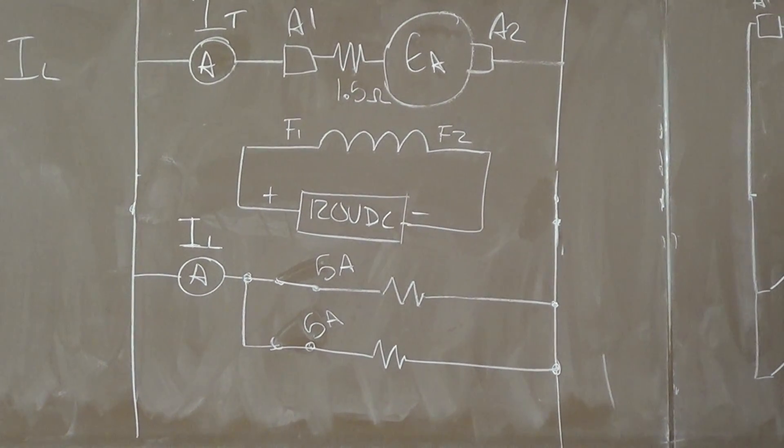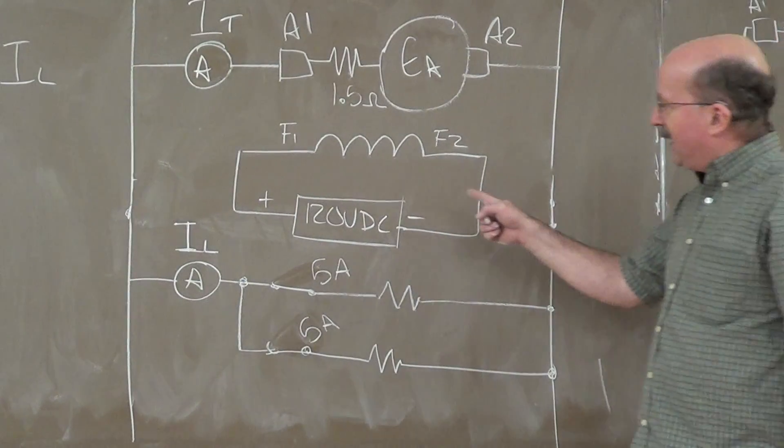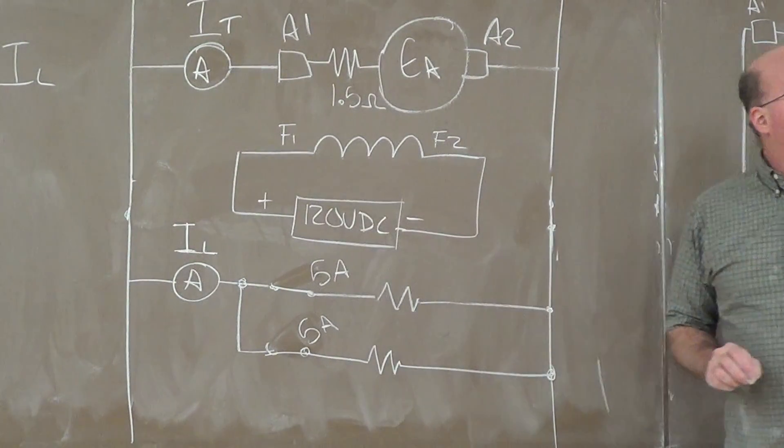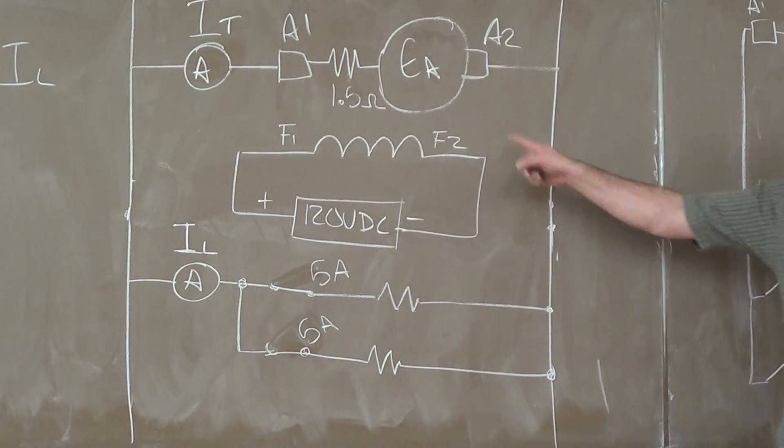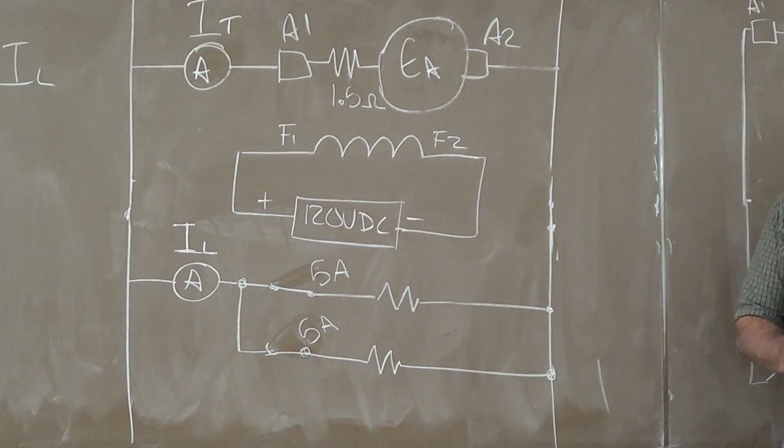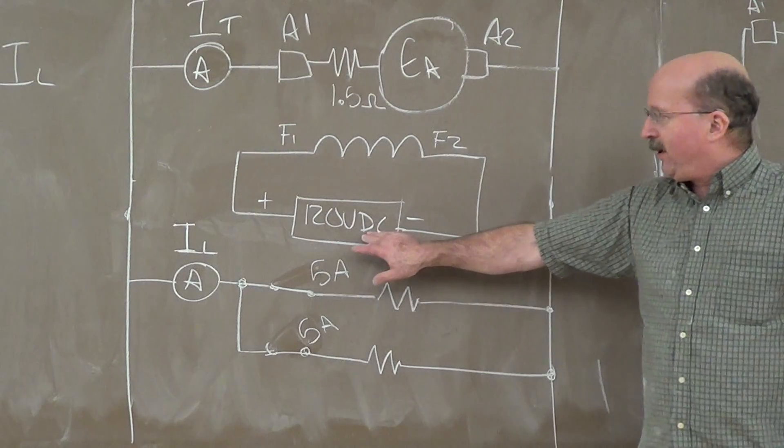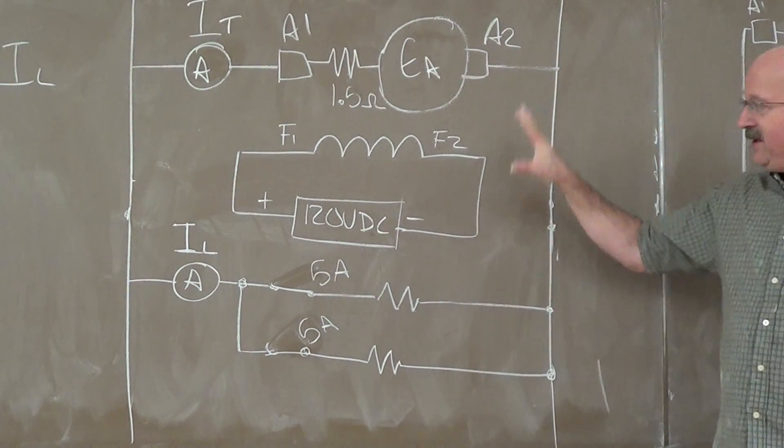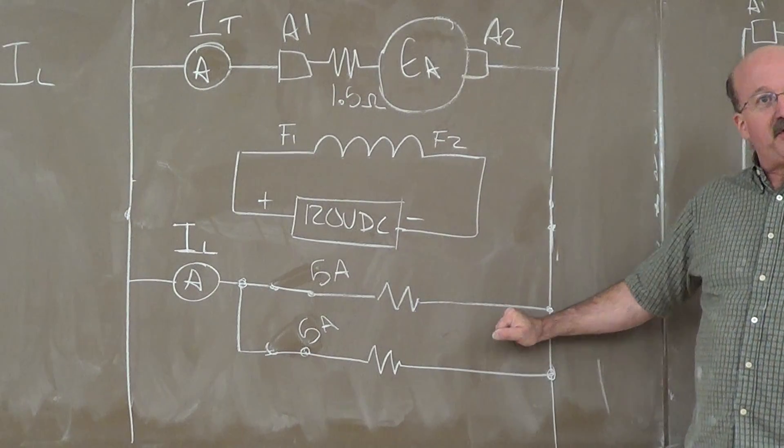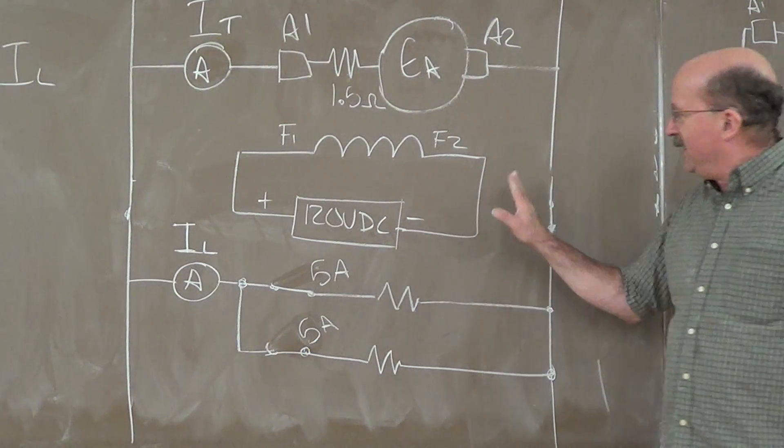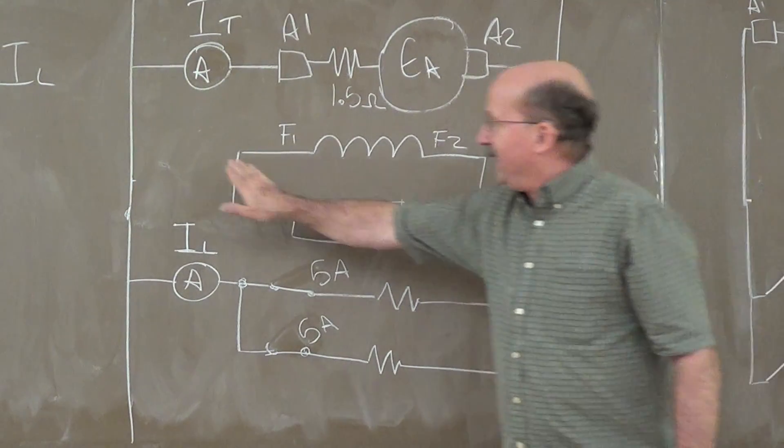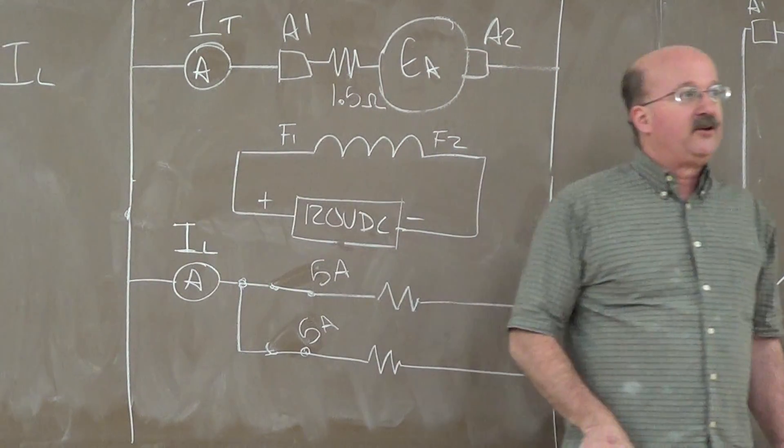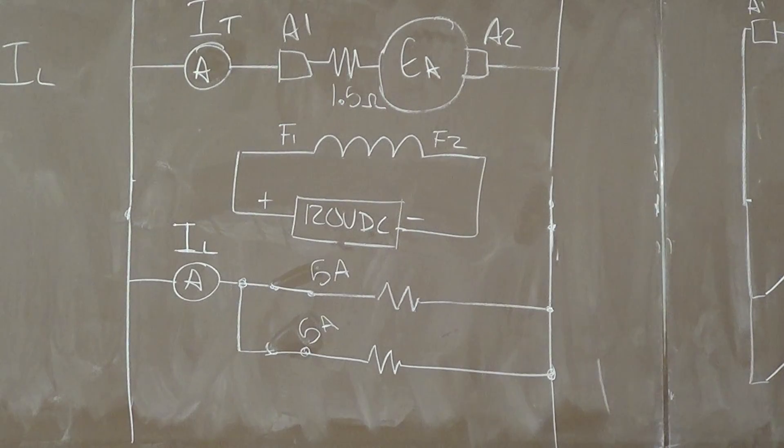We're talking about separately excited generators. If you look at this line ladder here, you see what I did is I disconnected the shunt field from its connection across the armature. We apply a constant 120 volts to it. Everything else is the same. In fact, it's the same diagram. All I did is went and erased the connection here and here and connected up a separate 120 volt power supply to the shunt field.